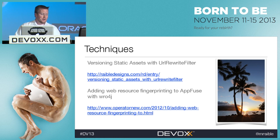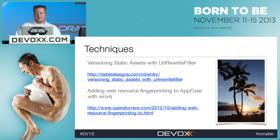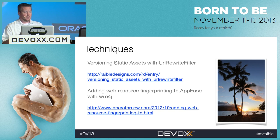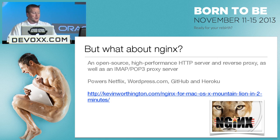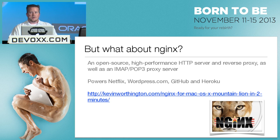With the URL rewrite filter and WRO4J, I've done versioning of static assets. If you set expires headers on CSS and JavaScript, they recommend setting them a year in advance. The problem is if you have the same path like CSS/bootstrap.css, no one will get a new version. So I put version numbers in the path — not as a query string, but in the actual path. Or you can do it at build time creating an MD5 string of the components — that's web resource fingerprinting, implemented by one of the AppFuse developers. The second approach increased build time by 15 to 20 seconds, which is undesirable for Maven builds, so I ended up doing it at runtime instead.